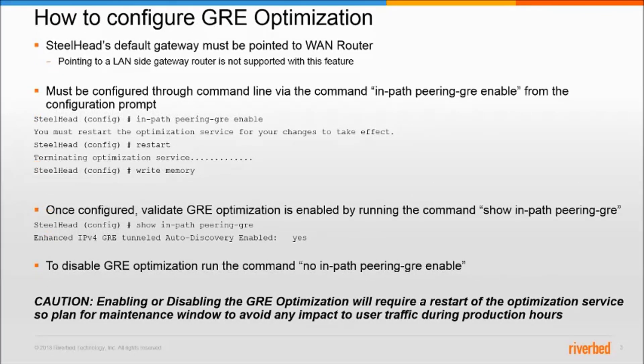Now, before we enable this feature, it's important that we take care of one specific configuration. We need to ensure that the Steelhead's default gateway points to the WAN router. This is very important, as otherwise you could find yourself in a potential routing loop if you point to a LAN-side router. Please ensure that when enabling this feature, the Steelhead's default gateway points to a WAN router.